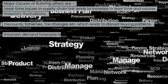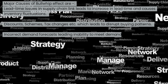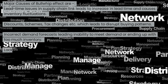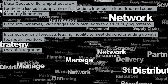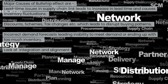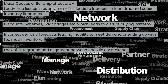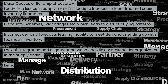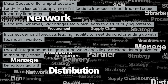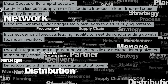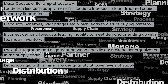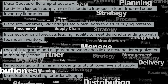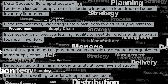Incorrect demand forecasts leading to an inability to meet demand or ending up with too much inventory. Lack of integration and alignment between each link or stakeholder organization in the supply chain. Being too rigid with minimum order quantity at lower levels of supply. Manufacturers waiting for order pile-up to achieve economies of scale.